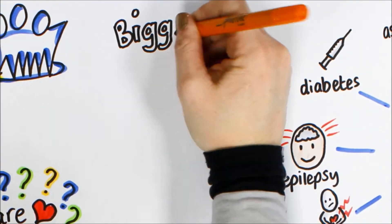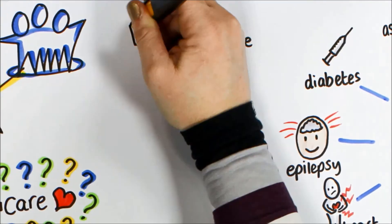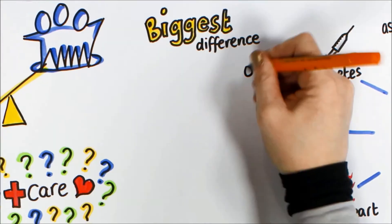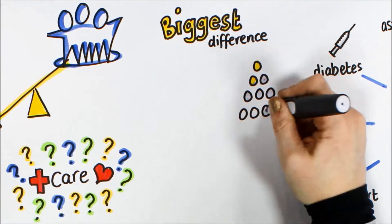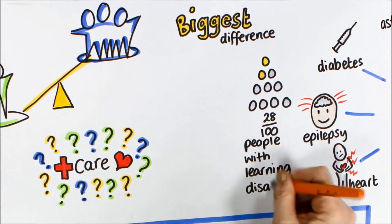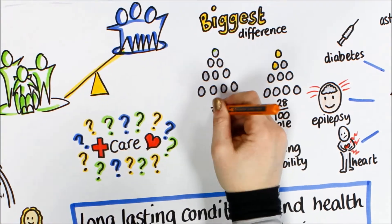We found that the biggest difference was for epilepsy. 28 out of every 100 people with learning disabilities had epilepsy, compared to less than one person out of every 100 in the general population.